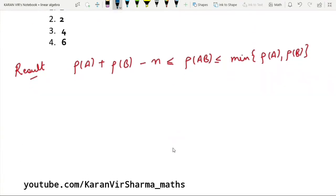So we know a result that rank of A plus rank of B minus n is always less than rank of AB, which is further less than or equal to minimum of rank of A comma rank of B.